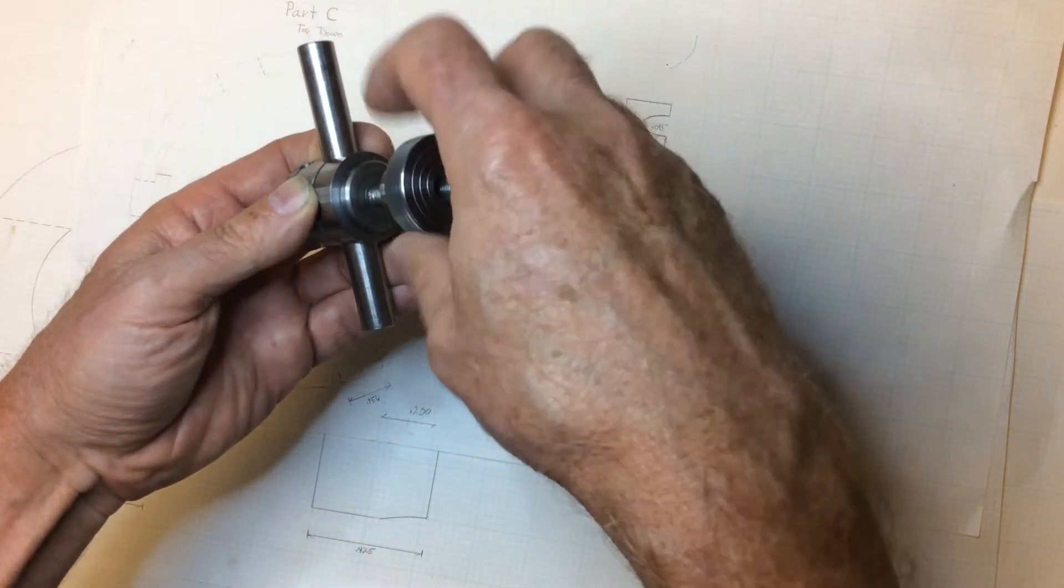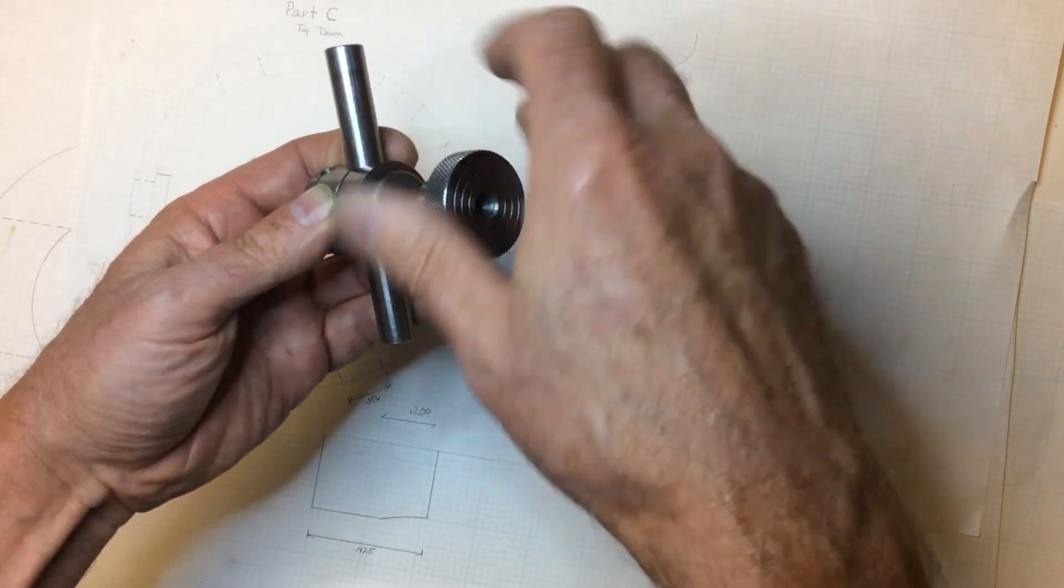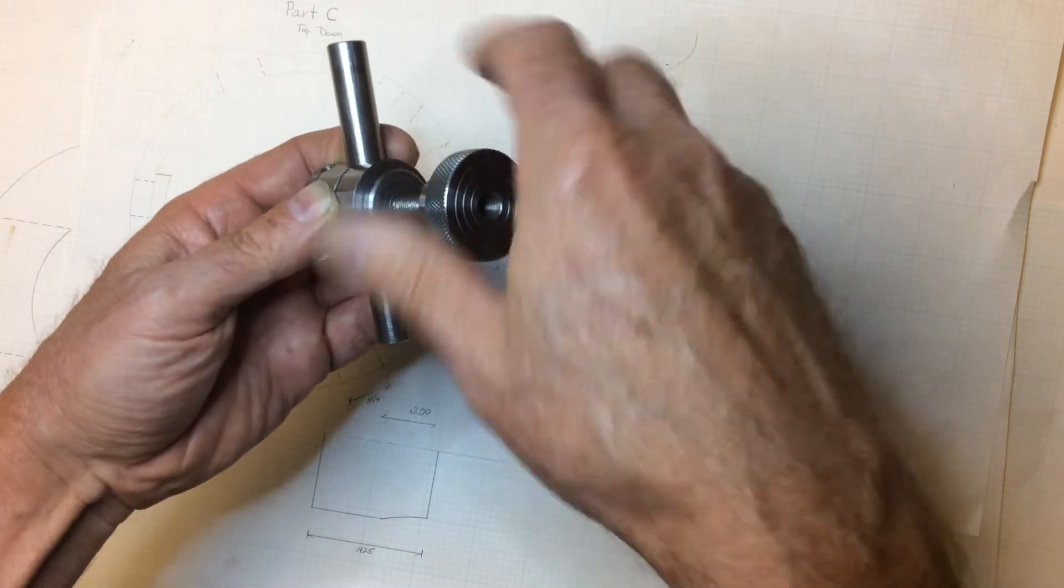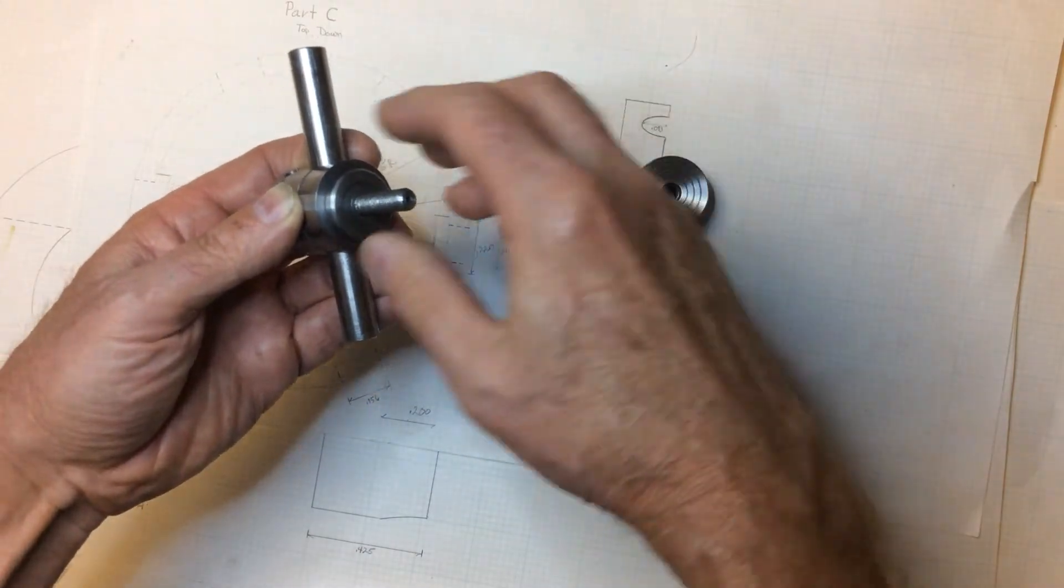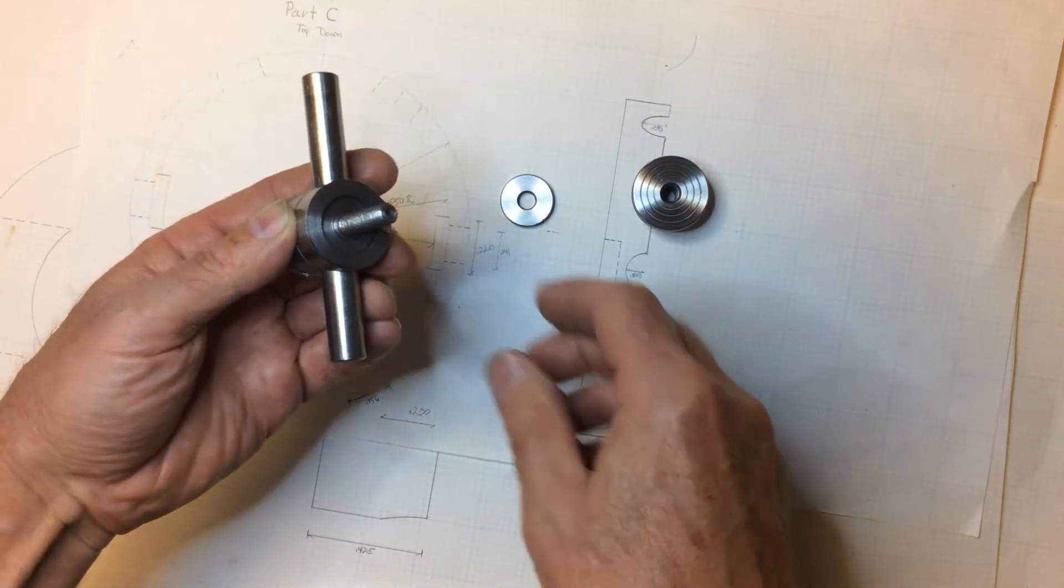Incidentally, this is all made out of 4140 prehard. And I drew up my drawings based on the general construction of the Starrett snug, but just scaled it up a little bit. So there's a washer.